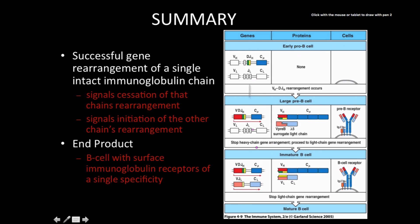In the gene development diagram, we see the variable region, the D and J segments, and the C-mu region. As recombination takes place, we develop this heavy chain gene compatible with the surrogate light chain. If compatible, we start making an actual light chain, and in doing so we develop into an immature B-cell, which develops into a mature B-cell, which goes on to fight infections.